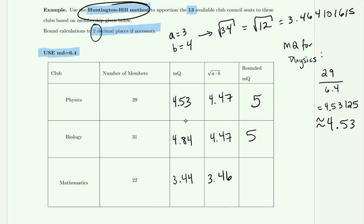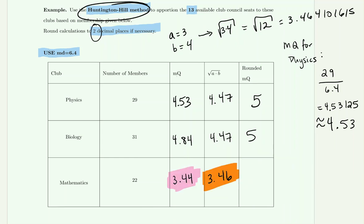For mathematics, comparing the MQ of 3.44 to the square root of AB of 3.46 — here 3.46 is slightly larger, so the square root of AB is bigger than the MQ. When MQ is smaller, we round down, so we round it to 3.